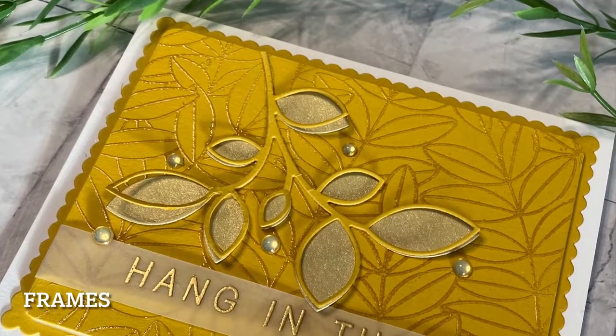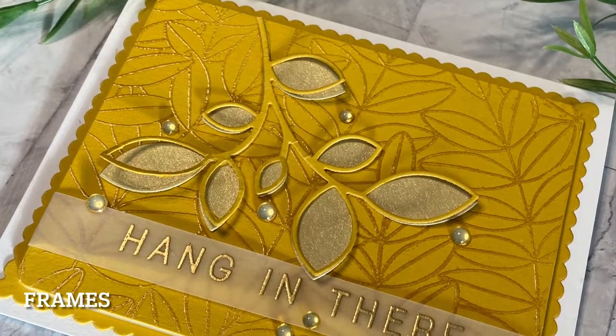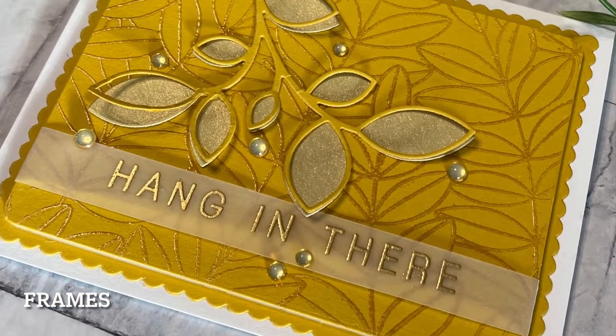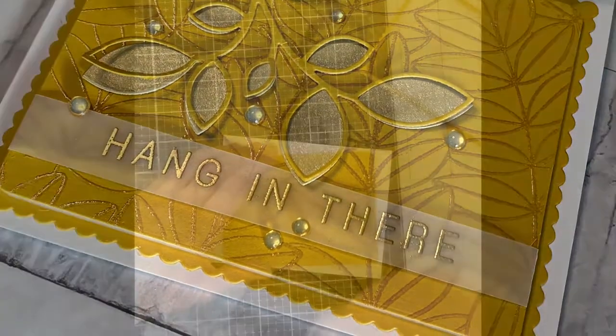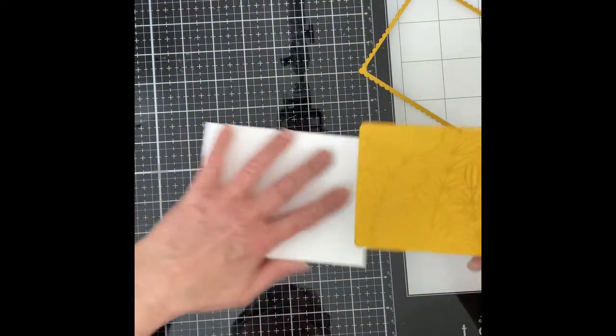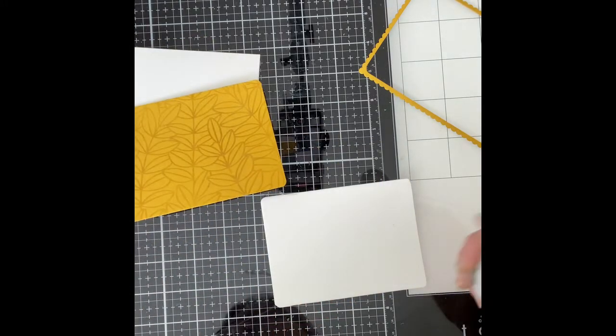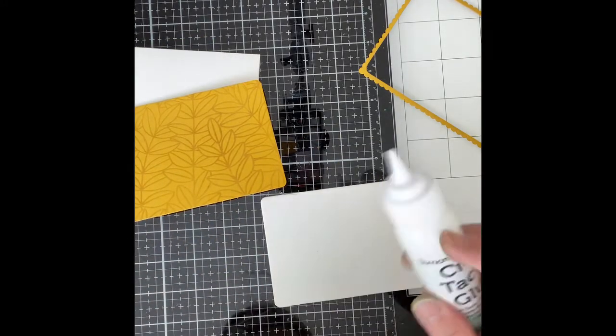For the Amber card, I used a Frame Scallop die from Simon Says Stamps Frames. Frames is an older die set, but it is one of my all-time favorites and I use it a lot.